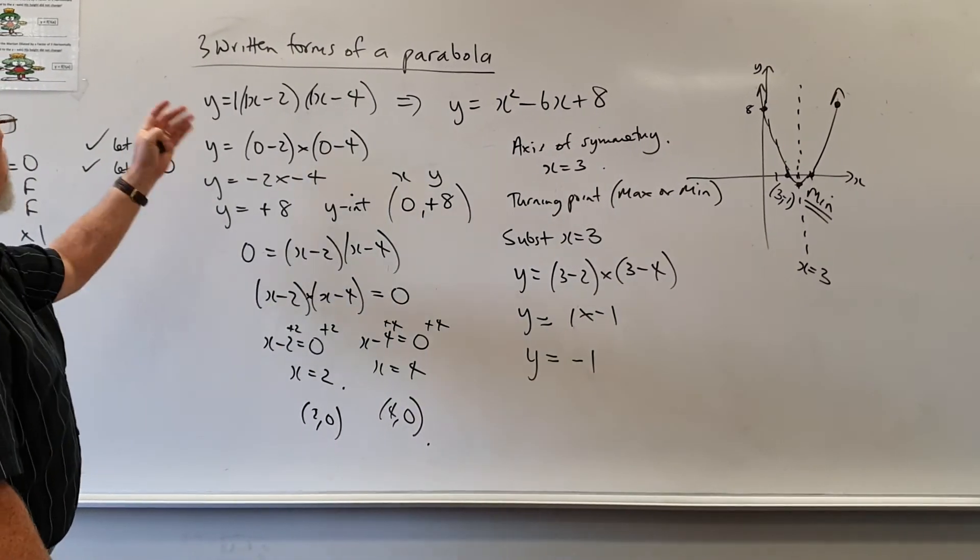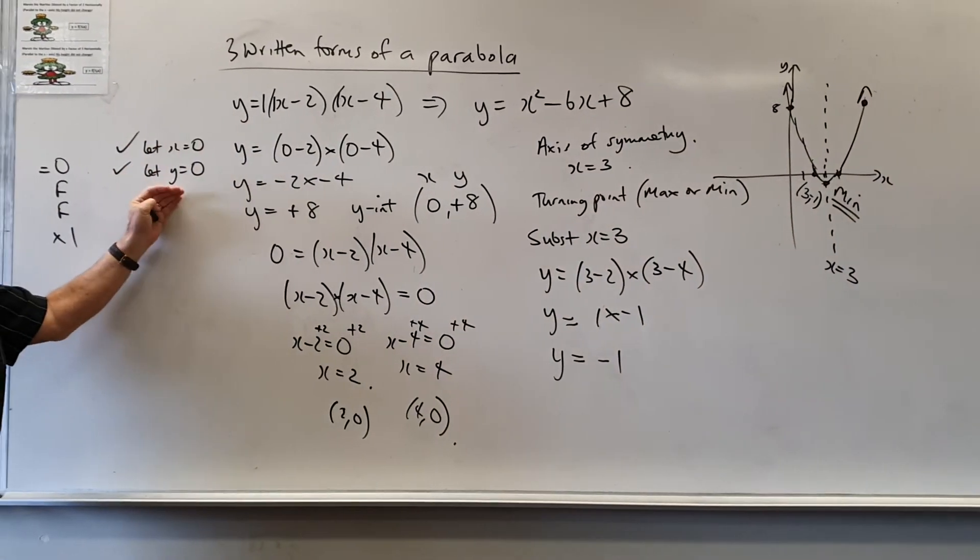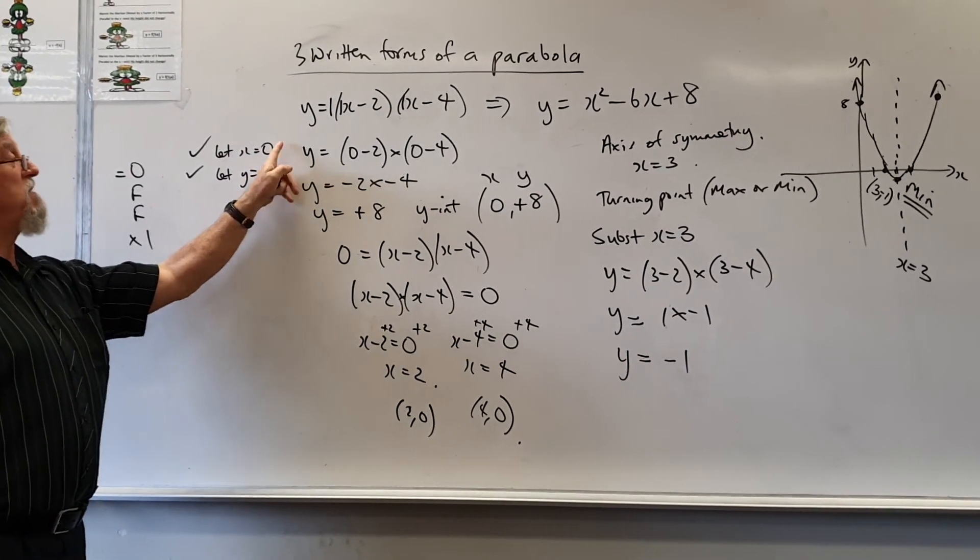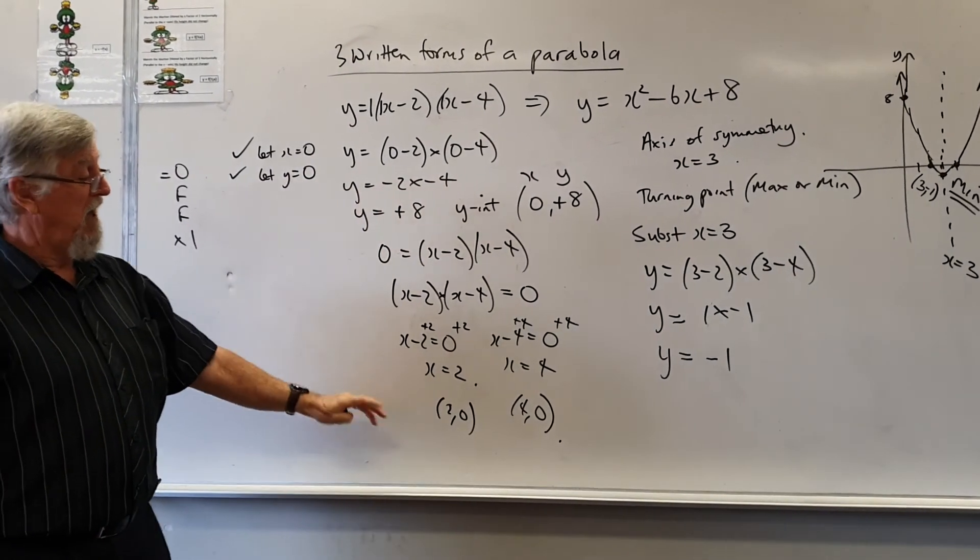So, go back to the basics. You do your usual. Let x equal 0, let y equal 0, that will give us the y intercepts, the x intercepts. How do we get the axis of symmetry?